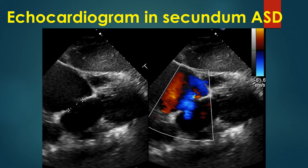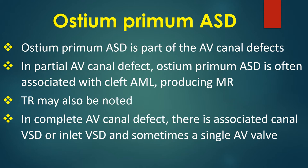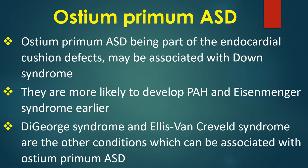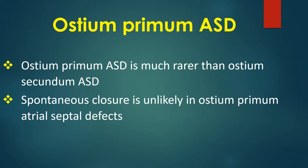Such right to left shunt can cause stroke due to paradoxical embolism — an embolism from the right side of the heart reaching the left side and systemic circulation. Ostium primum ASD is part of AV canal defects. In partial AV canal defect, ostium primum ASD is often associated with cleft anterior mitral leaflet producing mitral regurgitation; tricuspid regurgitation may also be noted. In complete AV canal defect, there is an associated canal VSD or inlet VSD, and sometimes a single AV valve. Ostium primum ASD, being part of endocardial cushion defects, may be associated with Down syndrome, and patients are more likely to develop pulmonary hypertension and Eisenmenger syndrome earlier. Ostium primum ASD is much rarer than ostium secundum ASD.